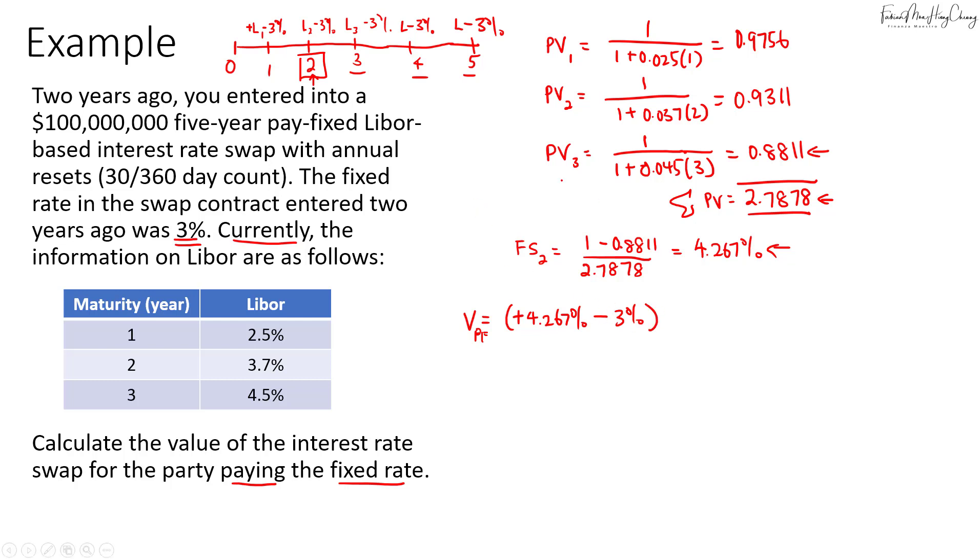And then we will need to PV this for the last three payments. So the total of the last three PVs will be 2.7878. And don't forget, this is just assuming a $1 notional, but our notional is $100 million. So lastly, we convert it to our actual notional, which is $100 million.